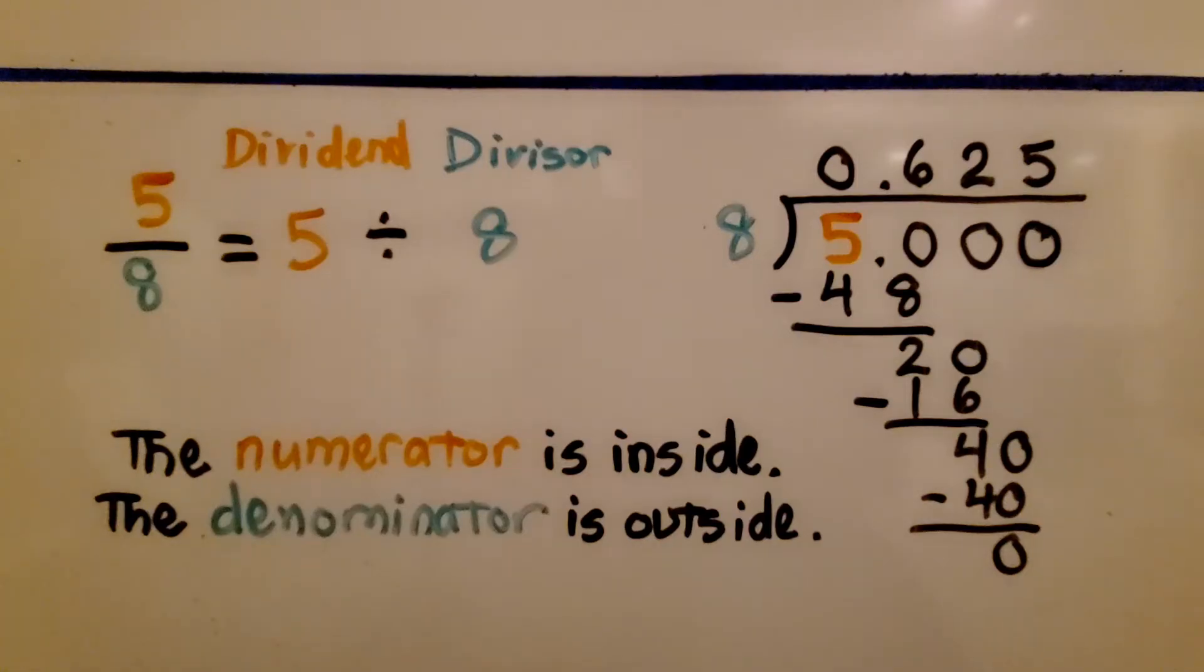As we're finding the fractional part as a decimal, the numerator becomes the dividend and the denominator becomes the divisor.